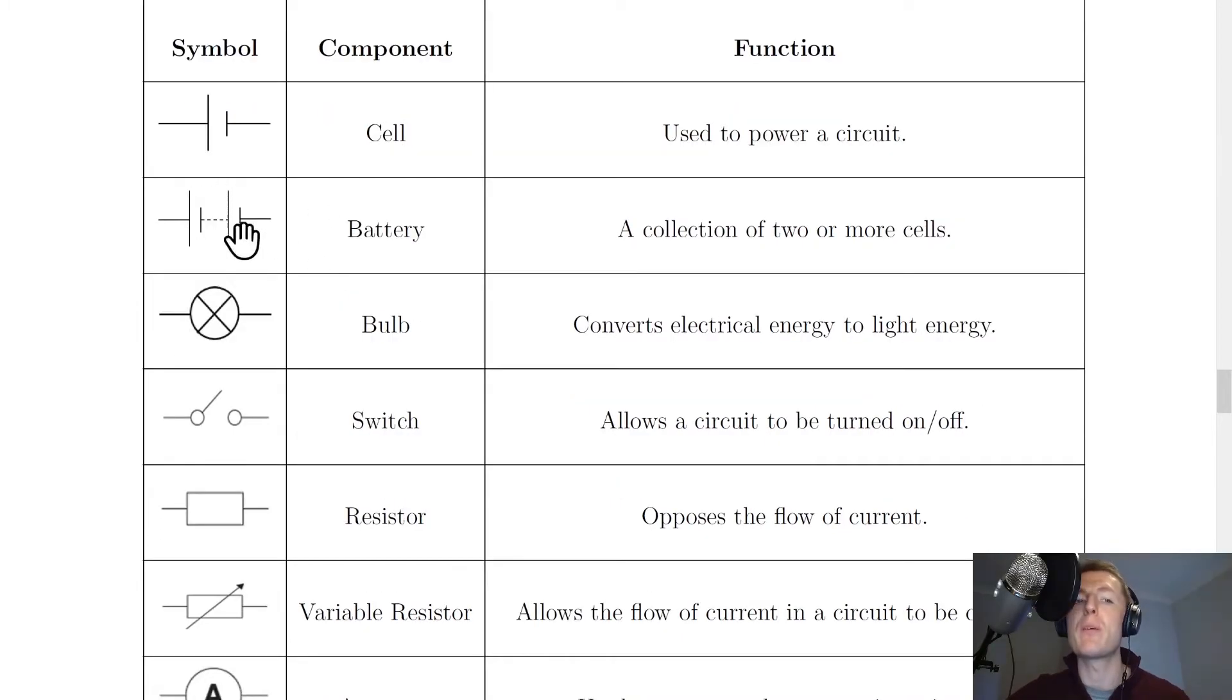Next we have a battery. So the battery looks like this with two or more cells. So we can say that a battery is a collection of two or more cells. And notice how the two cells are joined in the middle by a dashed line. That's important to include when you're drawing a battery in a circuit diagram.